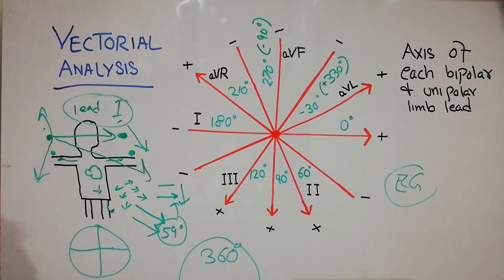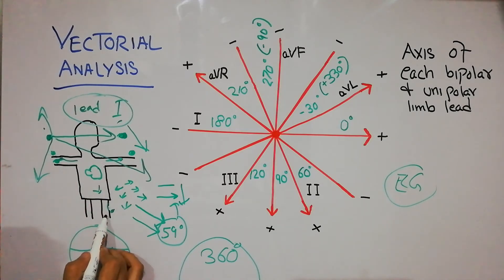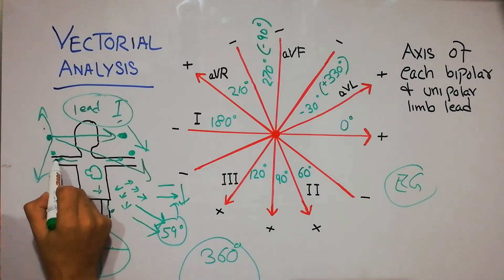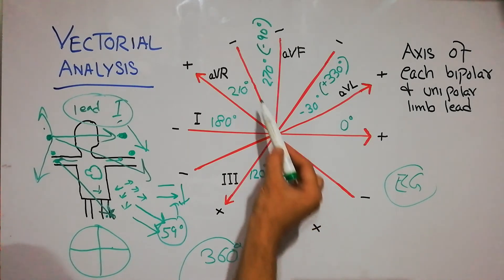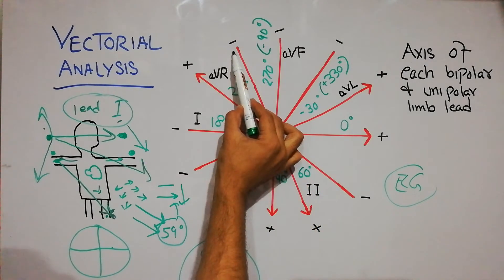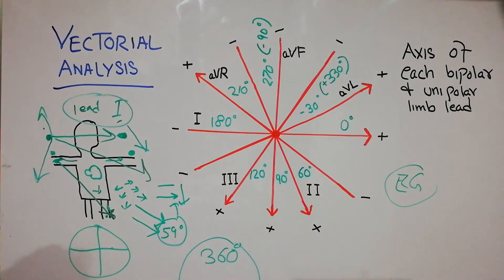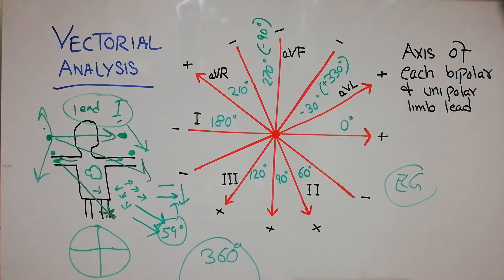Lead II is obtained between the right arm and the left foot. It starts from the right arm and ends toward the left foot. Plotting this angle from the heart to the left arm and down to the left foot gives approximately 60 degrees, so Lead II is assigned 60 degrees — a fixed number.